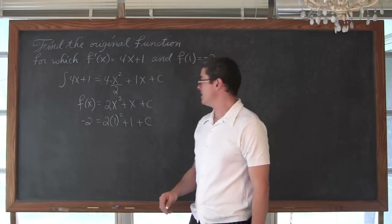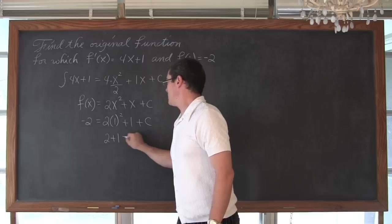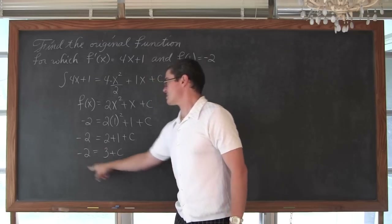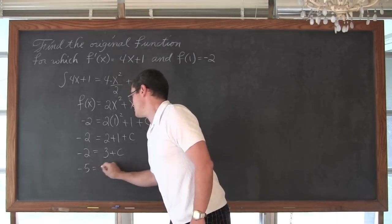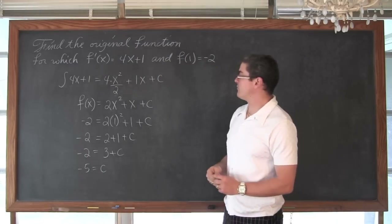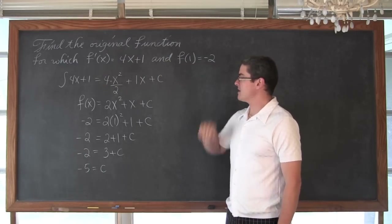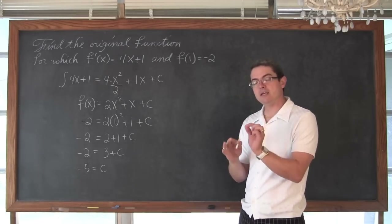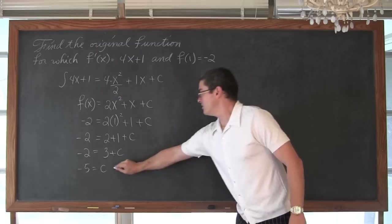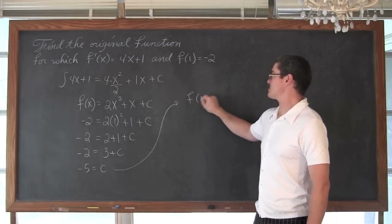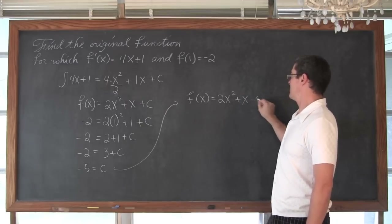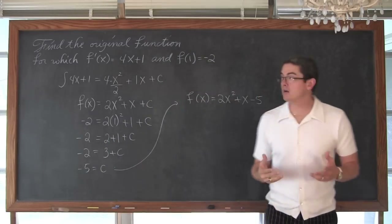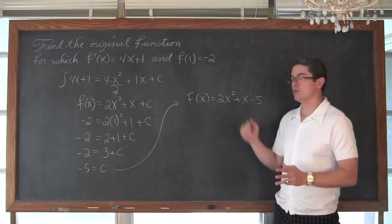So we have 2 times 1 squared — 1 squared is 1, 2 times 1 is 2 — plus 1 plus C is equal to negative 2. That is negative 2 equals 3 plus C, and subtracting both sides by 3 we get negative 5 equals C. So unlike before where all we could find was a general solution with an unknown constant, we now have our particular solution — the original function. Using this value of C, f of x is equal to 2x squared plus x minus 5. And that is pretty much all there is to it. We find that antiderivative, we take the initial condition, plug it in, and find that particular solution.